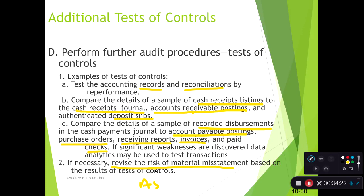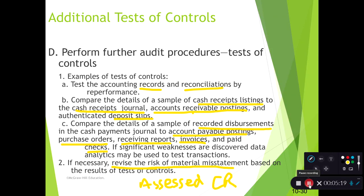We had the planned assessed control risk, and now this is the finalized assessed control risk based on the results. If the results suggest things are operating as strongly as we thought, we're fine. But if we think some controls are ineffective — for example, if we find too many issues with how the bank rec was done — that could increase our control risk, because we think there's less chance the bank rec could help catch a material misstatement.